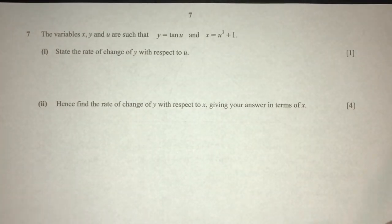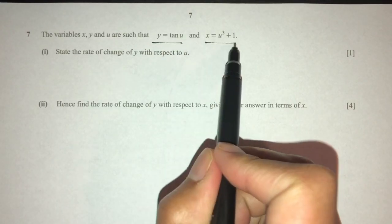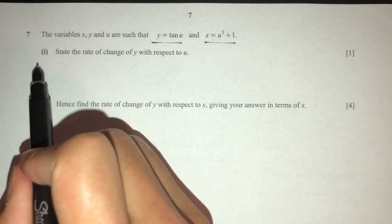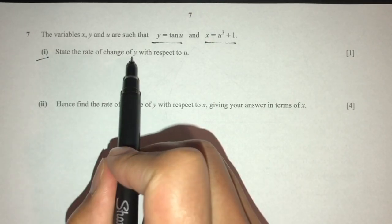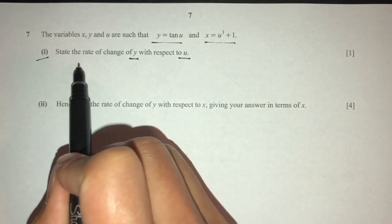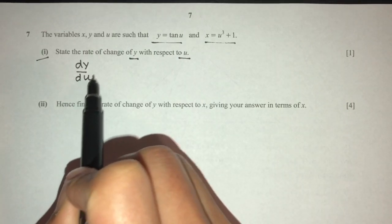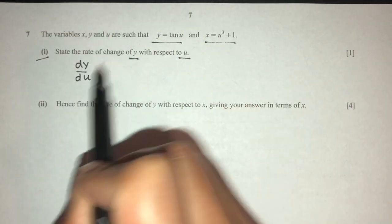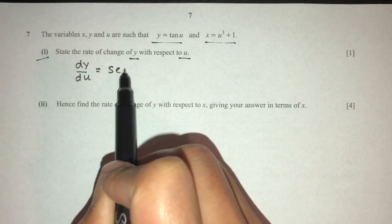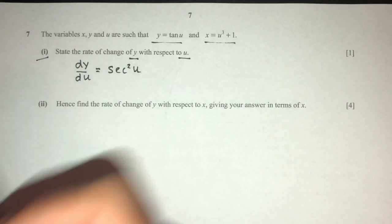Now for question number 7. The variables x, y, and u are related by the given equations. Part 1: state the rate of change of y with respect to u. We need to find dy/du. Differentiating, that will become sec²u. That is the first part.